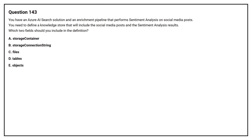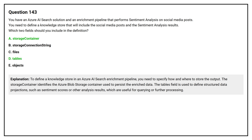Option A, storage container. Option B, storage connection string. Option C, files. Option D, tables. Option E, objects. The correct answers are option A, storage container, and option D, tables. To define a knowledge store in an Azure AI Search enrichment pipeline, you need to specify how and where to store the output. The storage container identifies the Azure Blob storage container used to persist the enriched data. The tables field is used to define structured data projections, such as sentiment scores or other analysis results, which are useful for querying or further processing.